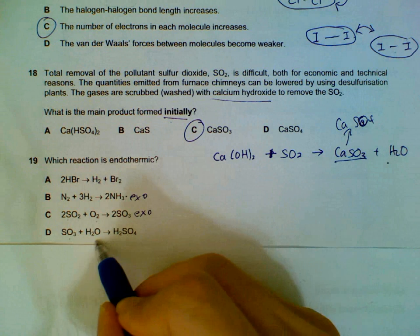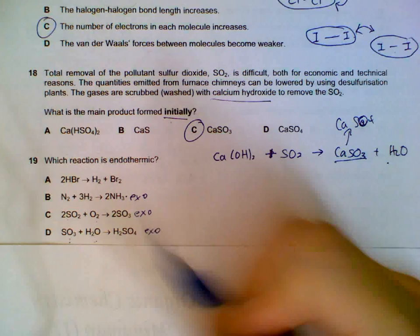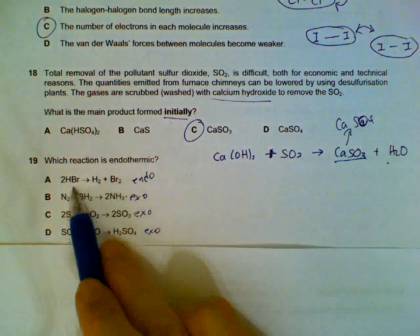This is hydration of sulfur trioxide. It's a very exothermic reaction. So by elimination, we get the first one, which is the decomposition of hydrogen bromide.